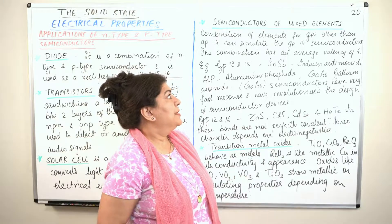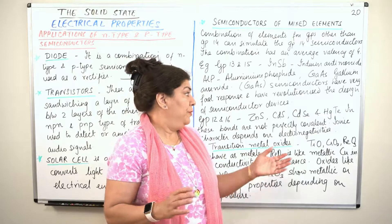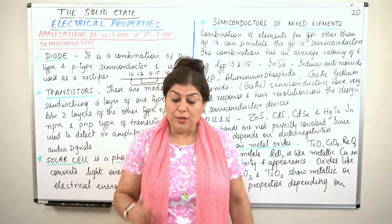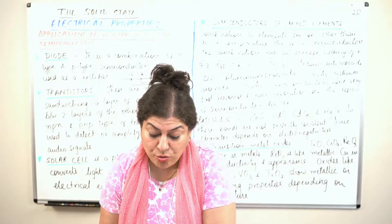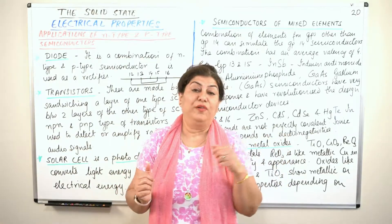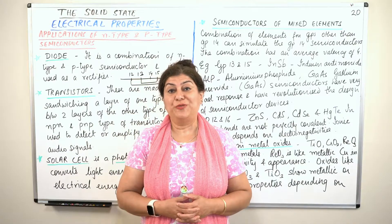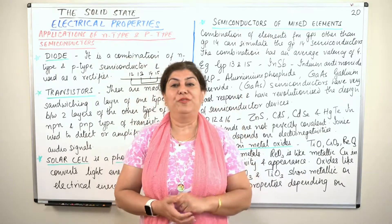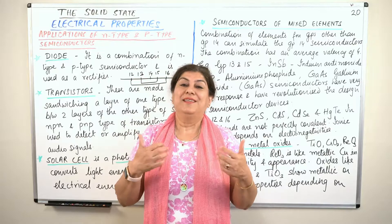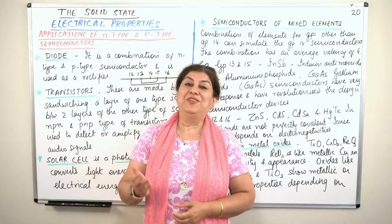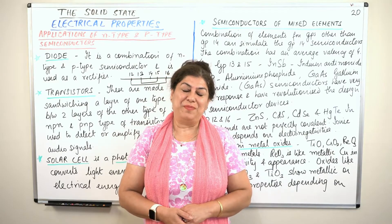So this was about the electrical properties of solids. The next topic we will take up will be the magnetic properties, which will also be the final topic of this chapter. If you wish to watch the other videos of this chapter, please click the link that appears on top of the video. If you found this video helpful, give it a thumbs up, subscribe to my channel, recommend it to your friends, and please keep returning for more videos on chemistry. Thank you for watching and bye-bye for now.